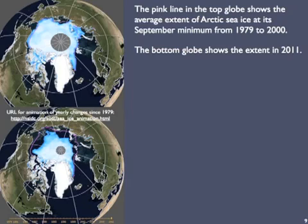Another change involves Arctic sea ice. Coverage of this has broken through into the mainstream news media recently. The pink line in both globes shows the minimum extent of the ice at the end of the summer — usually early to mid-September — averaged over the period 1979 to 2000. The actual ice in the top globe is the minimum extent in 1979; the bottom globe is the minimum extent in 2011. Yikes! If you go to the URL shown on the slide, you can see an animation of the changes from 1979 through 2011, but that animation only covers the last 30 years or so.